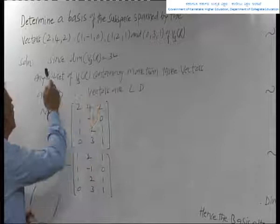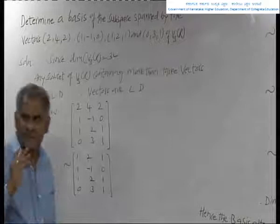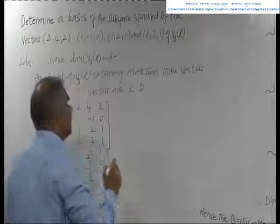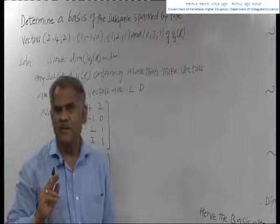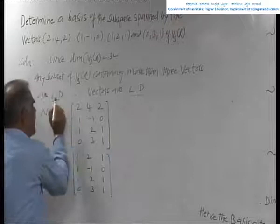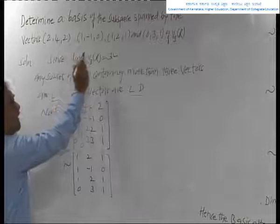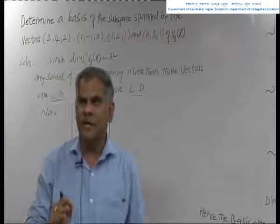In another example: determine a basis of the subspace spanned by the vectors (2, 4, 2), (1, -1, 0), (1, 2, 1), and (0, 3, 1) of V3r. V3r is again the vector space over the real field with 3-component vectors. Here also, the dimension of V3r is 3, so any subset with more than 3 vectors is clearly linearly dependent. We treat each vector as a row of a matrix and reduce to echelon form using elementary row operations.